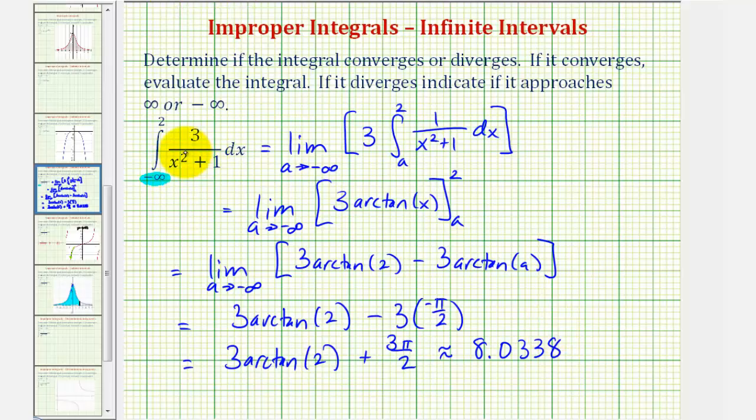So we can say this integral converges, and the integral is equal to three arctangent two, plus three pi over two, or this approximation. If we take a look at the graph of the function three divided by the quantity x squared plus one, it is non-negative on this interval, and therefore, this would be the area under the curve bounded by the x axis.